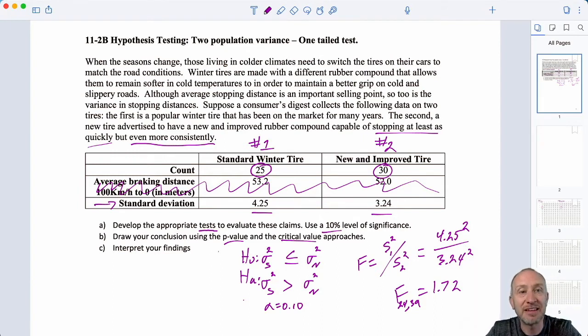Same here, although that average breaking distance, I think we will need that in the next part of this problem, which is, of course, the test on means. But for the test on variance, I have to ignore the information that is not relevant to that particular test. So, we have our test statistic, 1.72. I have my degrees of freedom, my numerator degrees of freedom, 24, denominator, 29.